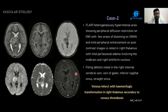The second vascular case shows a FLAIR heterogeneously hyperintense area with peripheral diffusion restriction on DWI, with few areas showing blooming on susceptibility-weighted sequence and mild peripheral enhancement on post-contrast imaging in the right thalamus. Mild peripheral edema is also noted in the midbrain and right lentiform nucleus. Filling defects are noted in the right internal cerebral vein, vein of Galen, inferior sagittal sinus, and straight sinus, suggesting thrombosis. This is a case of venous infarct with hemorrhagic transformation in the right thalamus secondary to venous thrombosis.